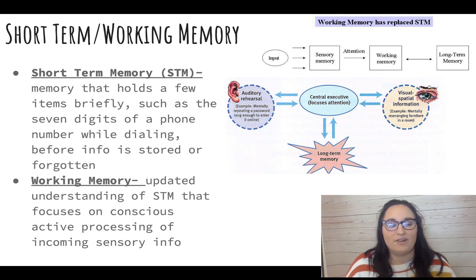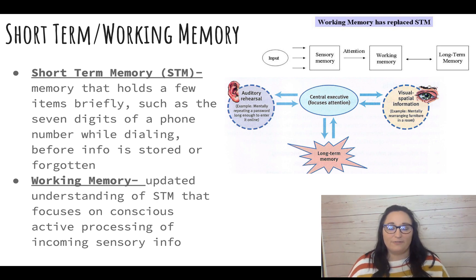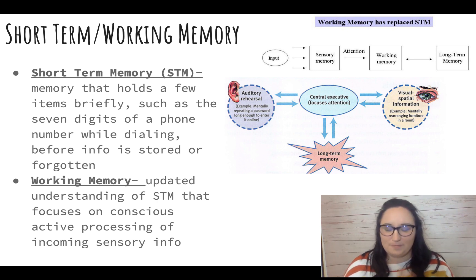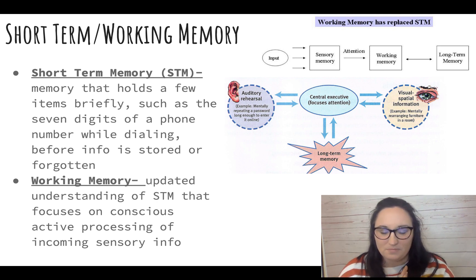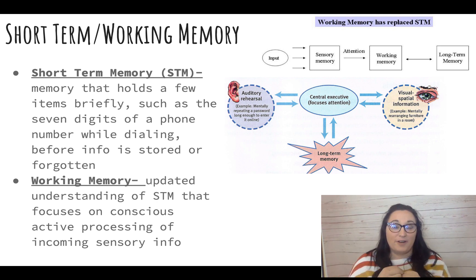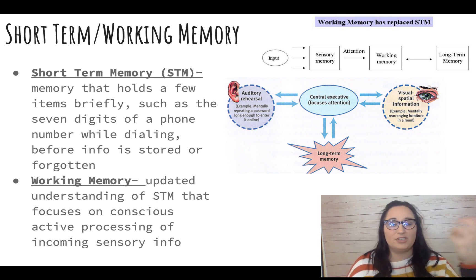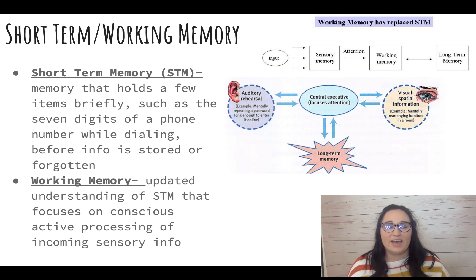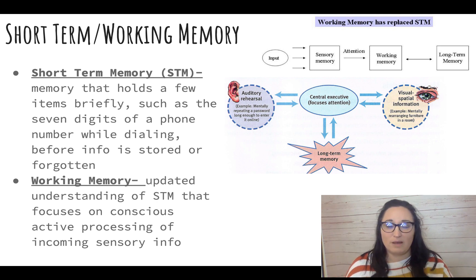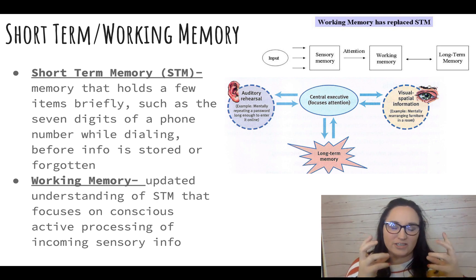If you've ever heard the term executive functioning, our executive functioning is our working memory. It's our ability to take information we've heard, information we've seen, and maybe stored information from our long-term memory, and put it all together, thinking about it consciously in that moment.